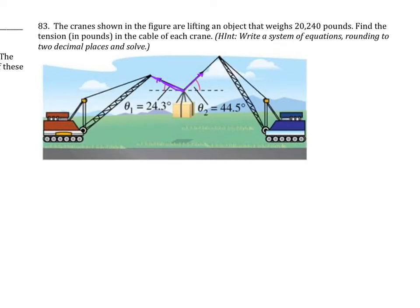Let's start first with the left crane. We need to know the theta. Remember, this is the directional angle, so it's not 24.3 degrees. It's actually going to be 180 degrees minus 24.3 degrees. Therefore, theta is going to be 155.7 degrees for this left crane.